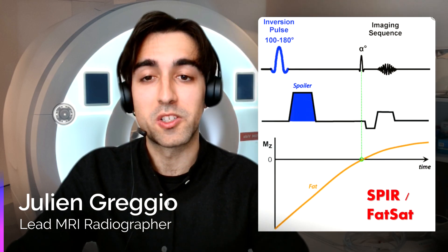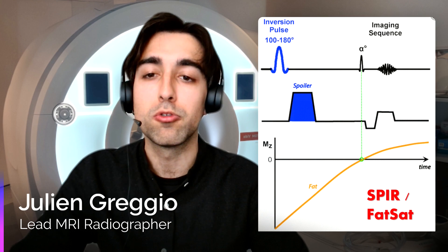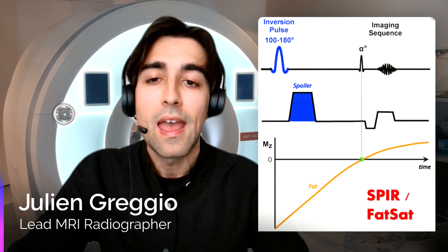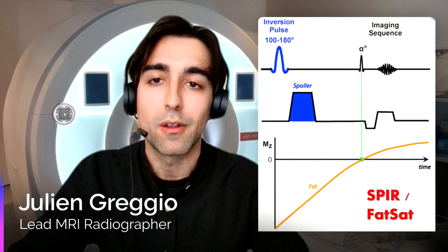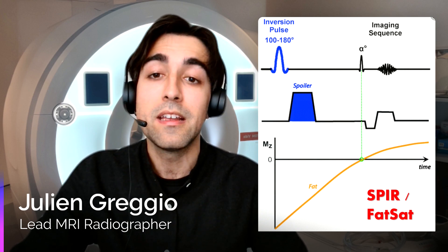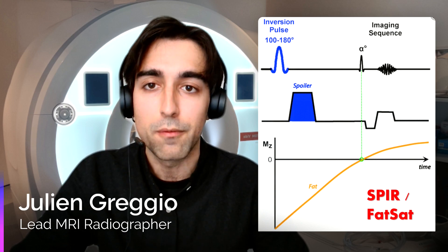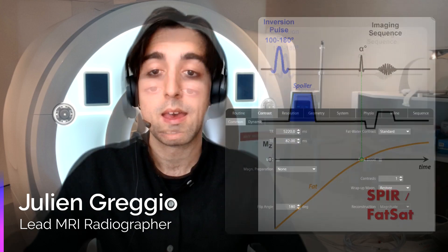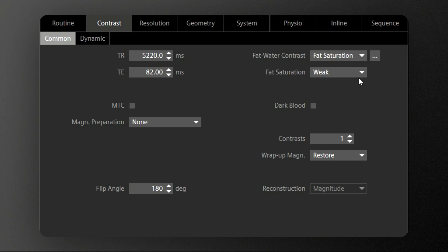Another possibility when it comes to suppressing the fat signal in MRI is relying on the SPIR technique, also known as FATSAT according to the MR vendor you are using. SPIR literally stands for Spectral Presaturation with Inversion Recovery. It employs a kind of hybrid approach, which combines the selective saturation of the fat signal using a specific radiofrequency pulse and the use of spoiler gradients. So the main difference with STIR is that this time the fat would be selectively saturated, rather than suppressing only those tissues that fall into a specific inversion time. To put this in practice, we just need to pick a T1 sequence from the scanner library and select the first option available in fat water contrast, namely fat saturation.